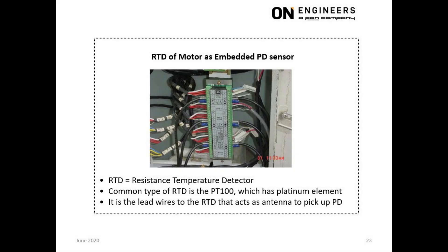This slide is about the use of RTDs in motors as PD sensors. RTD, or Resistance Temperature Detector, is used for temperature measurement. RTDs are inserted at the stator windings of the motors. The common type is the PT-100, which uses platinum as the sensing element. However, it is the long lead wires to the sensing elements that act as an antenna to detect PD.